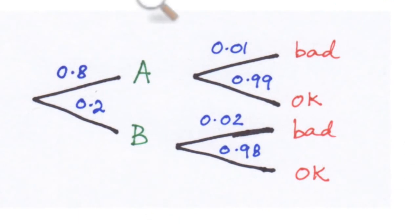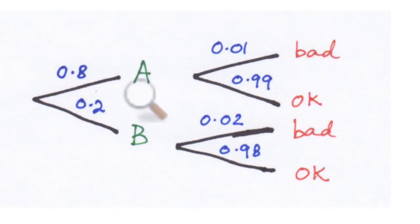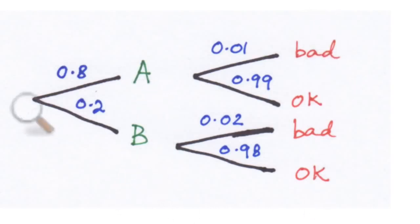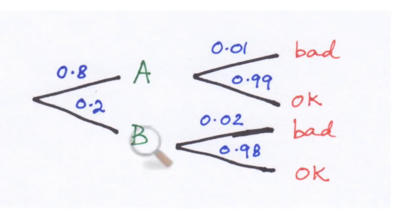There are two stages: first is the machine stage, and at the end there's the good-bad stage. The machine is either A or B, so your tree splits like this — a branch that goes to machine A and a branch that goes to machine B. On each branch, the corresponding probability is written.